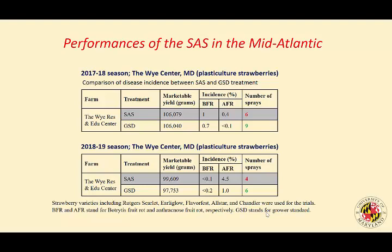Green means nothing to worry about; yellow or red means there is an infection risk for either Botrytis or anthracnose. The chart on the right shows infection risk in real time for both diseases — you don't need to spray if you're in the green zone. In 2017–18 field trials on the Eastern Shore, there was no difference in marketable yield or disease incidence between the SAS treatment and the grower standard weekly application program, and the SAS reduced fungicide applications by three sprays.